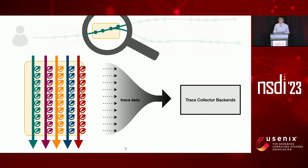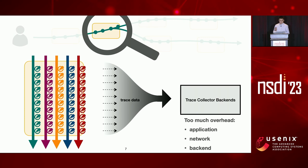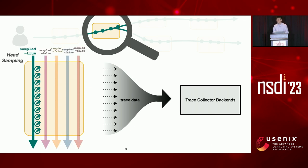A backend thread eagerly serializes all the trace data and pushes it into the trace collector backend. If you trace every request, it results in a lot of data. Collecting all that data introduces too much overhead on the application, network, and tracing backend. So in practice, tracing frameworks don't trace every request, but only sample a few of them and generate trace data only for sampled requests. One typical sampling mechanism is called head sampling, where when a request joins the system, a sampling decision is made upfront on whether that request will generate trace data.